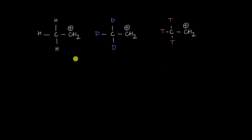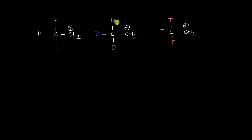In this video we are going to see how the hyperconjugating effect of an alkyl group changes if we replace hydrogen atoms with other heavier isotopes of hydrogen like deuterium and tritium.